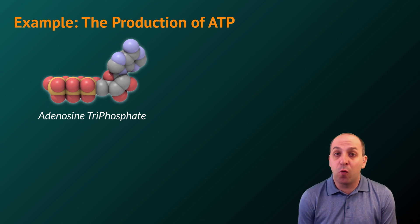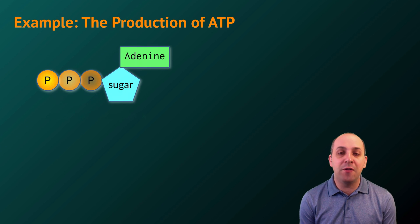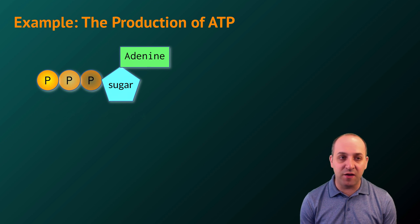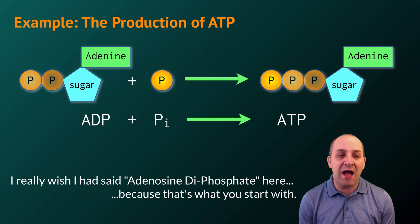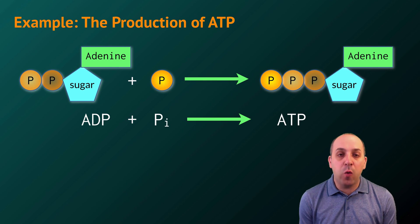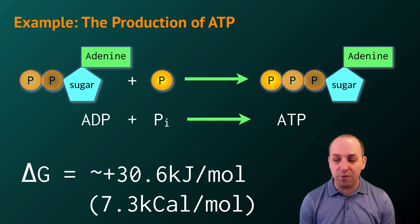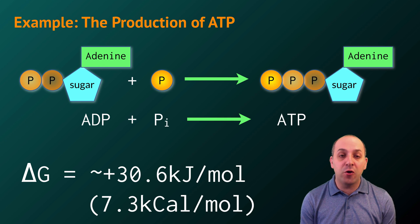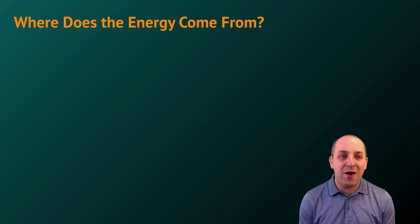Let's look at one example: the production of ATP, or adenosine triphosphate, a really important molecule in biological systems. I'll symbolize ATP as having an adenine nucleotide, a ribose sugar, and three phosphates. To make this molecule, we take ADP and add a phosphate group to it in order to make ATP. This requires an input of free energy — it is an endergonic process — and the delta G value for this is approximately +30.6 kilojoules per mole.